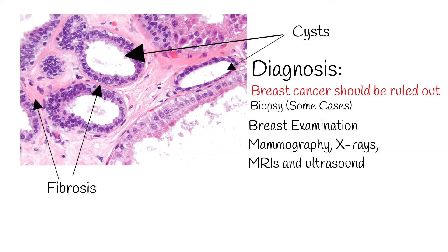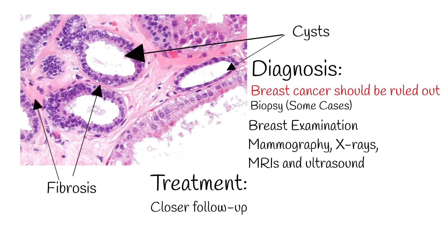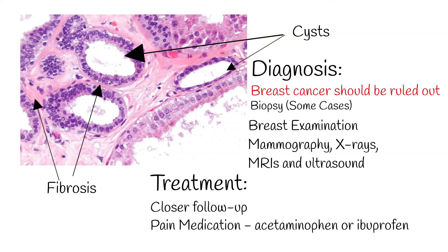Most women with fibrocystic changes who are asymptomatic do not need treatment; only a closer follow-up may be advised. The role of oral contraceptives and hormone replacement therapy is not fully determined in the treatment of fibrocystic breast. For pain, over-the-counter medicines such as acetaminophen or ibuprofen can be used.